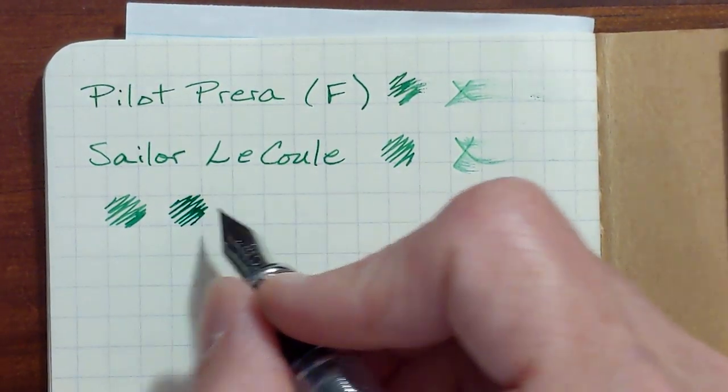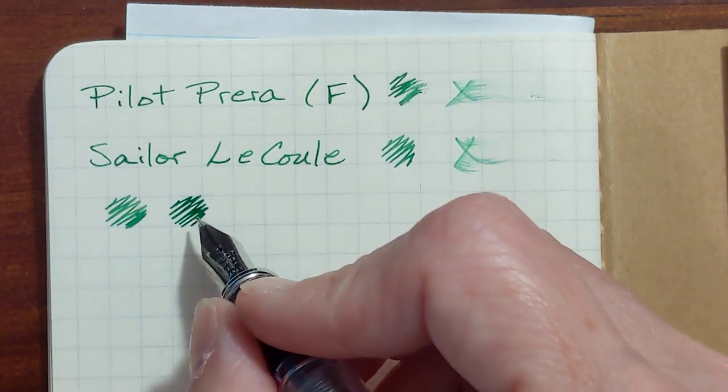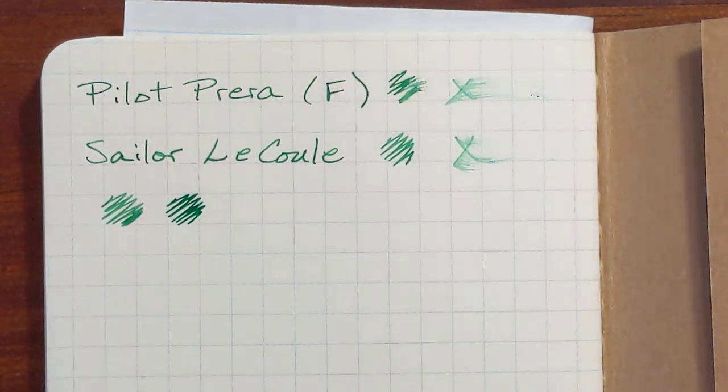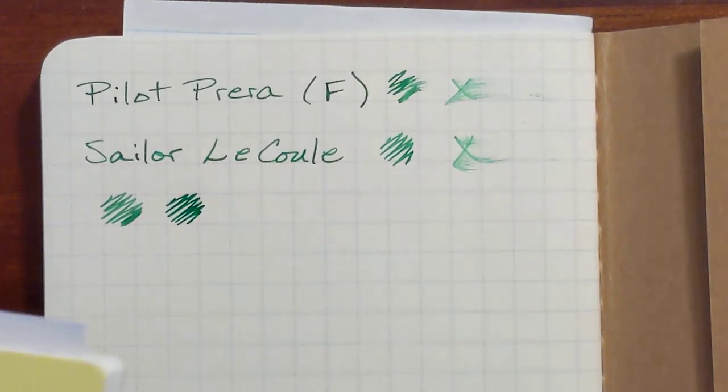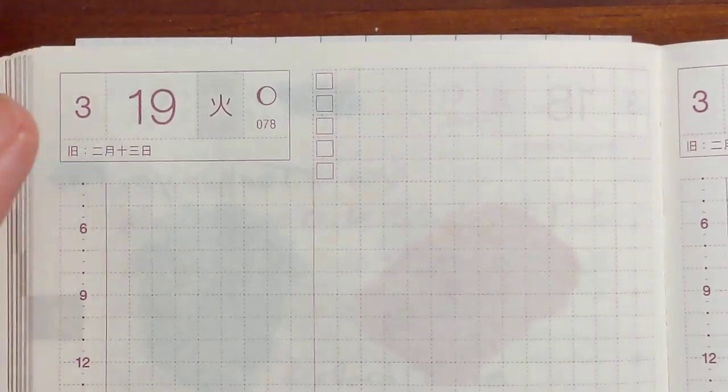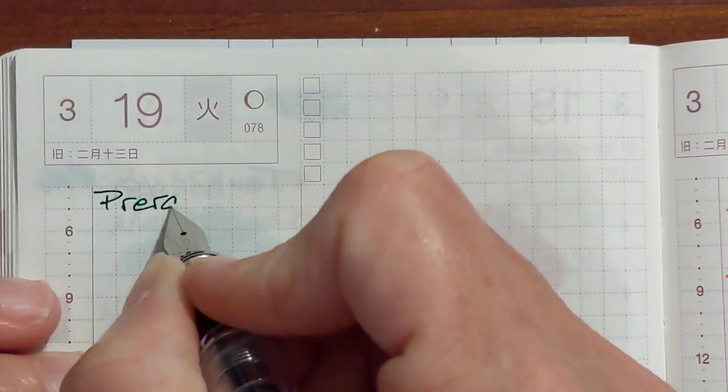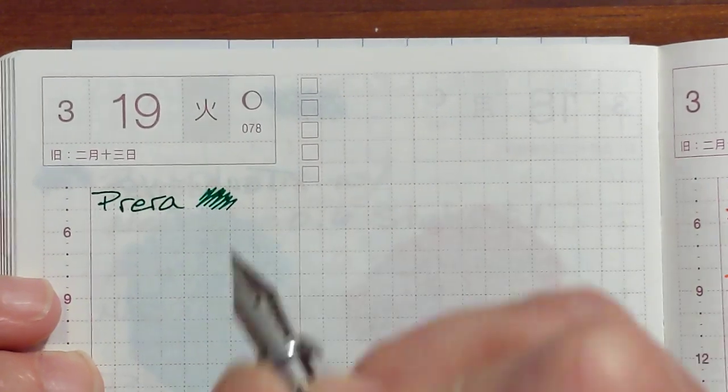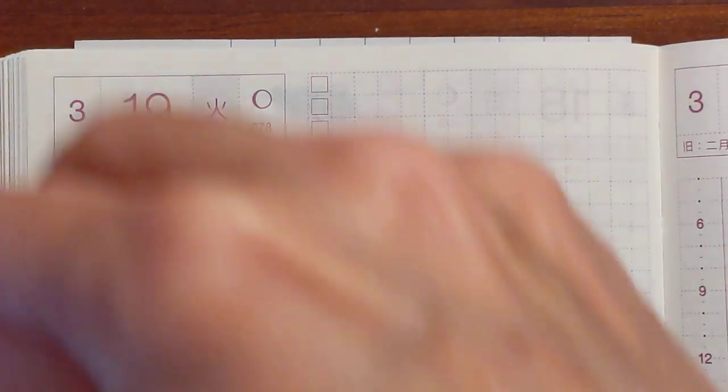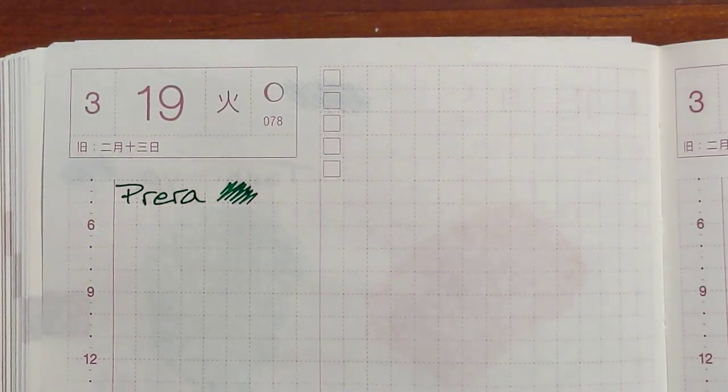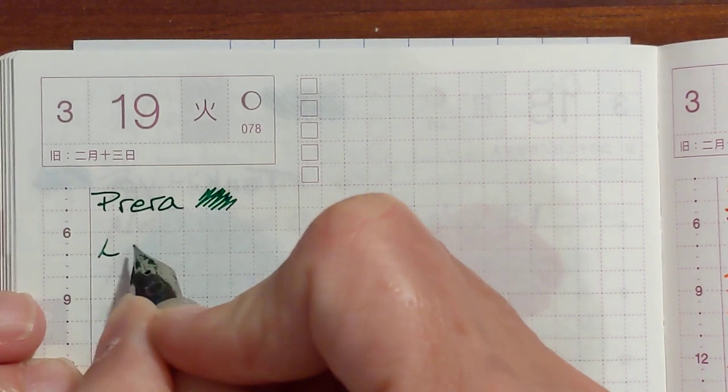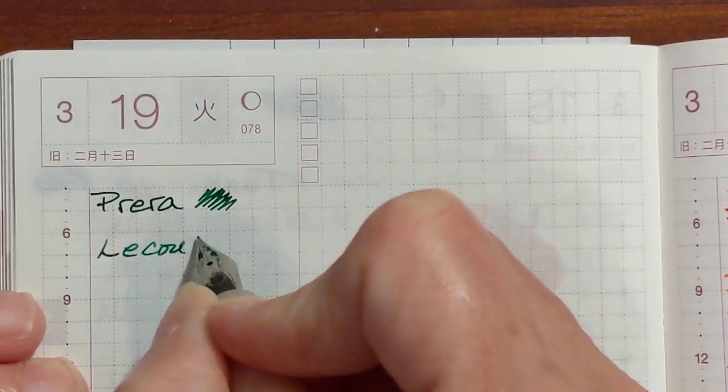Yeah, this is definitely smoother. There's still some feedback, but the Prera is smoother. Let me see, what other paper can I try? I'm going to try the Hobonichi. The Tomoe River paper in the Hobonichi. Let's see. Okay, there's definitely some feedback there.